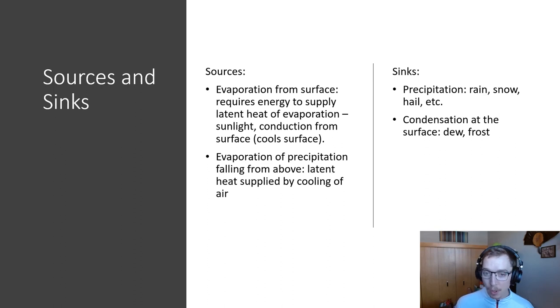From the surface requires energy to supply latent heat of evaporation. That energy usually comes in the form of sunlight, that thermal energy that heats the surface, overcoming the cooler surface and heating it up, giving that latent energy and that latent heat and allowing that liquid water to turn into water vapor. Same thing for evaporation of precipitation. So precipitation is kind of that condensed form of water. And as it falls from above, latent heat supplied by cooling, the cooling effect of the air can lead to that turning back into water vapor.